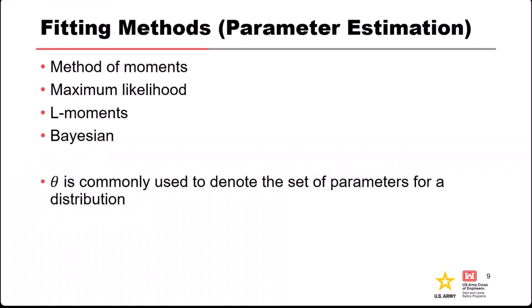Distribution fitting methods—here are four of the more common ones. Method of moments is the classic one most people are familiar with. You estimate the moments of your data—calculate mean and standard deviation—then equate the sample moments to the theoretical moments of the distribution and solve for the distribution parameters. For a normal distribution it's simple: the location is the mean and the scale is the standard deviation, so you just plug in the sample mean and standard deviation and you get the normal distribution.